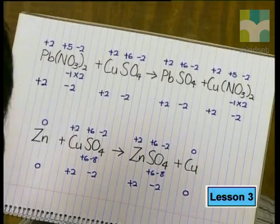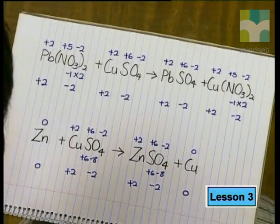Remember, a charge can't be created or destroyed. So where did the copper obtain these electrons? The only possible source is one of the other reactants. The source from which the electrons are obtained is called the reducing agent. From which substance in the reactants do you think the electrons came? Oxidation numbers tell us when there is a change in the arrangement of electrons, and the only other substance where the oxidation number changed was zinc.